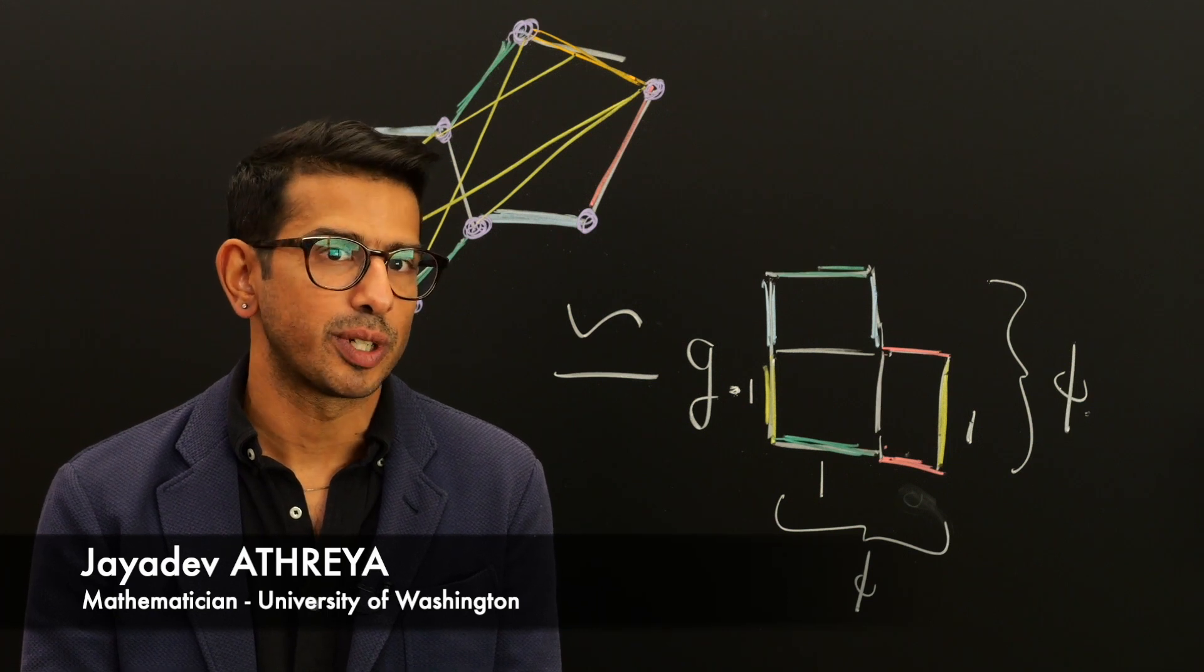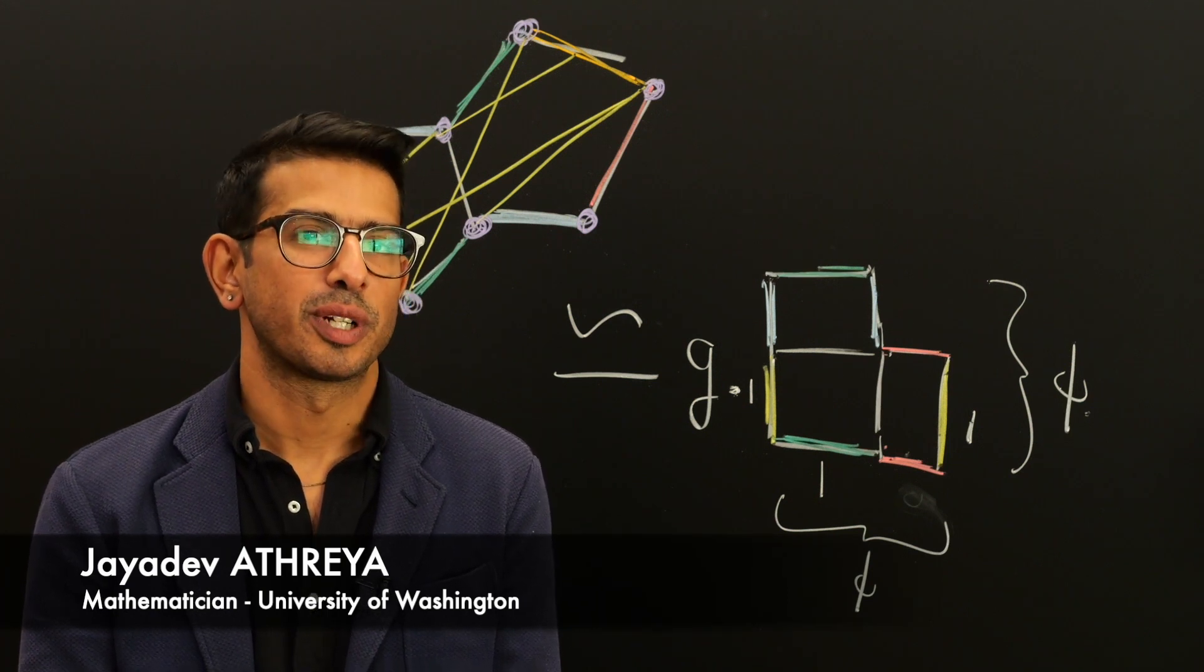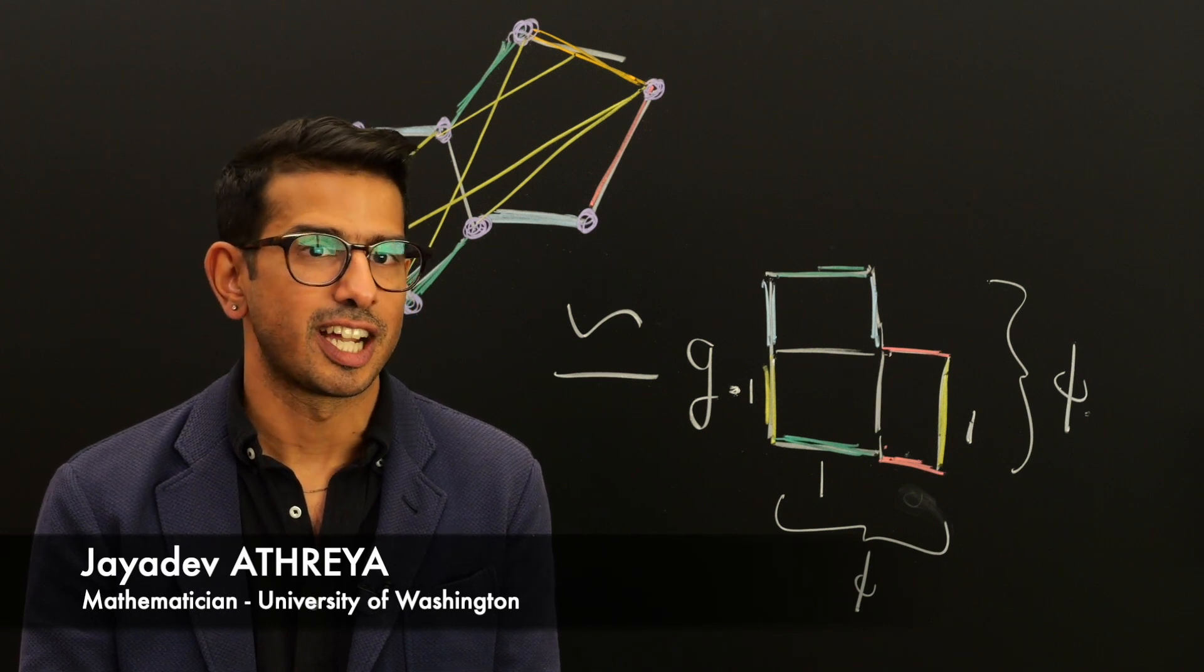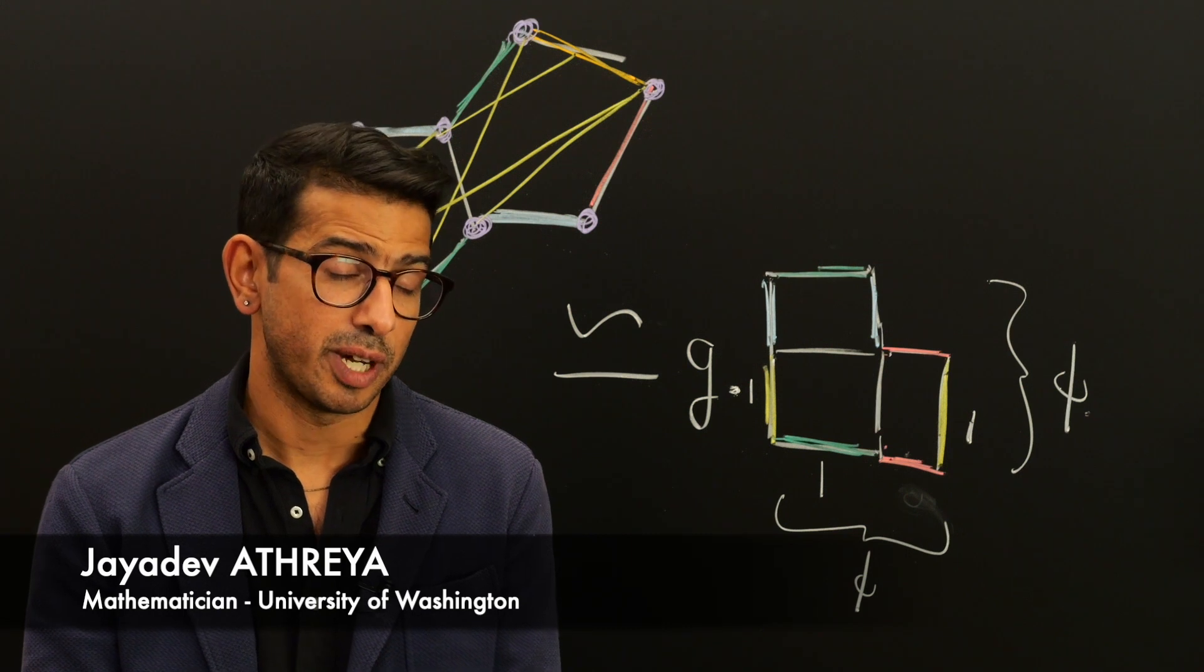Maybe you played the computer game Pac-Man when you were a kid. So when Pac-Man goes off the right side of the screen, he comes on the left side. When he goes off the top, he comes on the bottom.